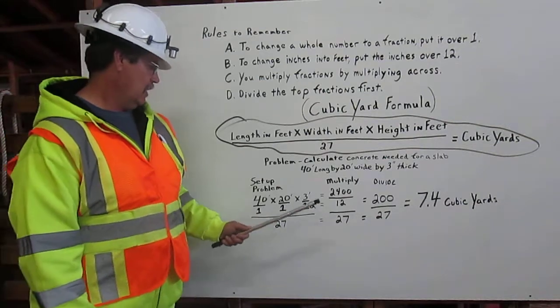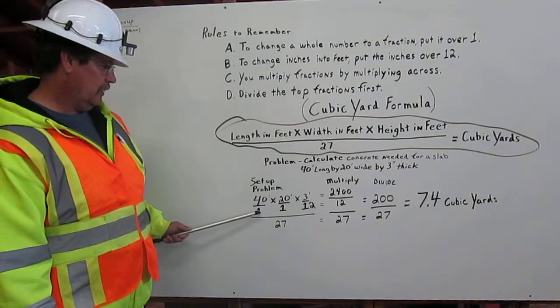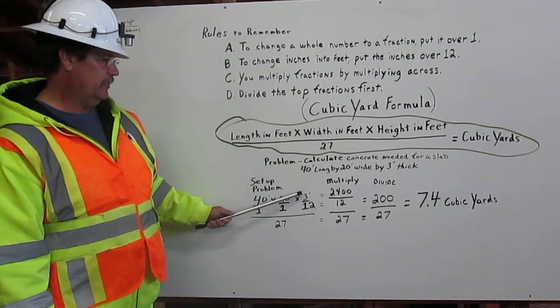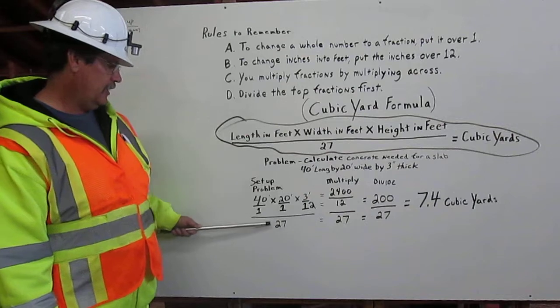We set up the problem by putting forty over one, times the twenty foot over one, times three foot over twelve, and divide all that by twenty-seven.